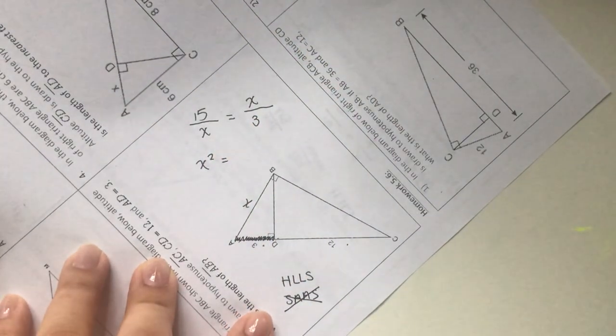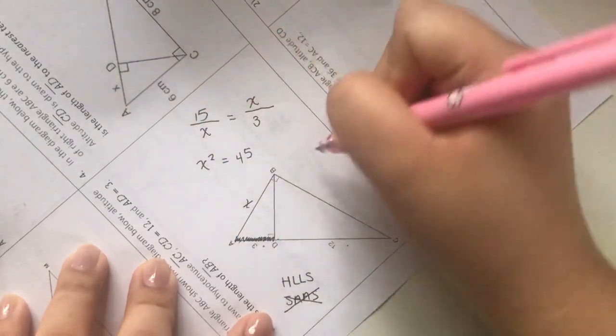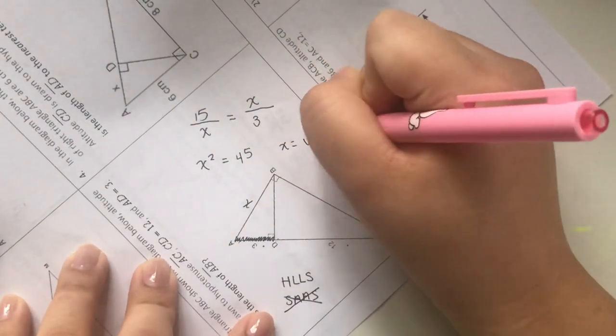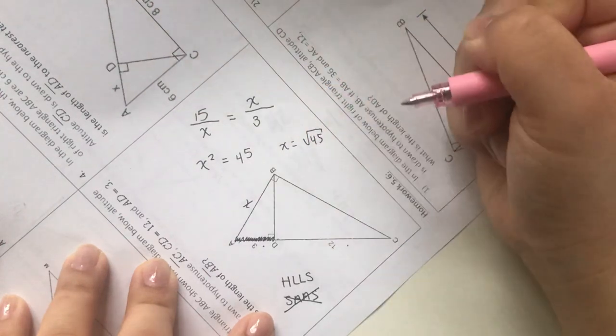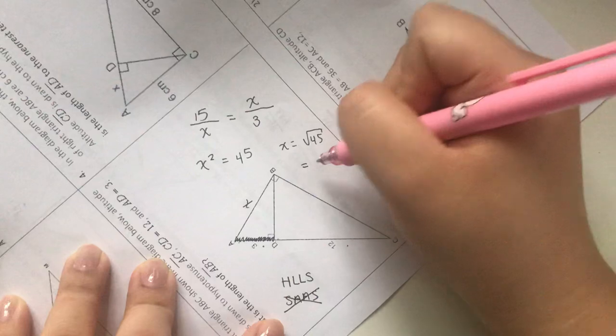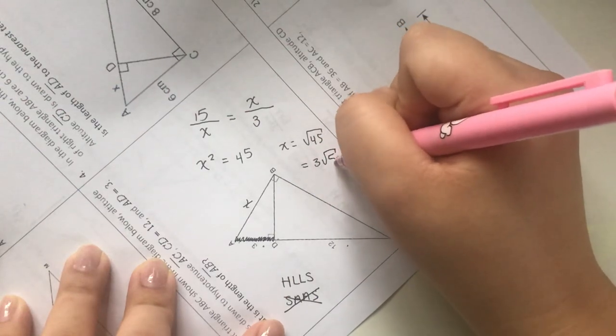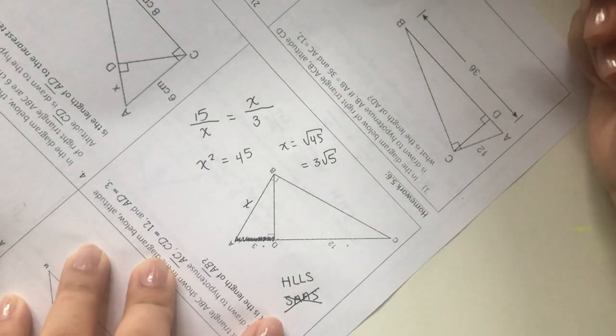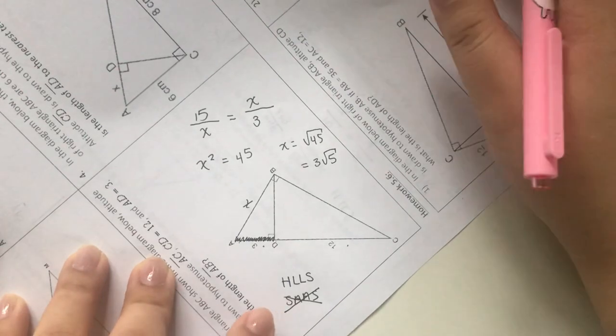Cross multiply: X squared equals, what's 15 times 3, 45. So X equals radical 45. You can leave it in decimal form, radical 45, or simplest radical form which is 3 radical 5.